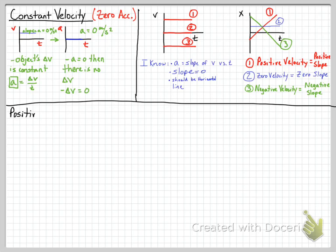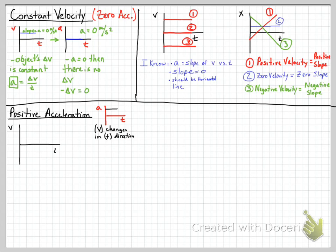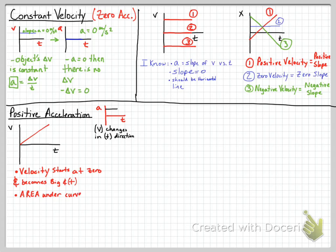Now we're going to talk about positive acceleration. It's a little bit more difficult to represent. On the acceleration versus time graph it should be a flat line in the positive quadrant because velocity is changing in the positive direction. On a velocity versus time graph, positive acceleration is easier to see. We have a line with a positive slope where velocity starts at zero and becomes big and positive, and the area under that line is going to be positive, meaning displacement is also positive.